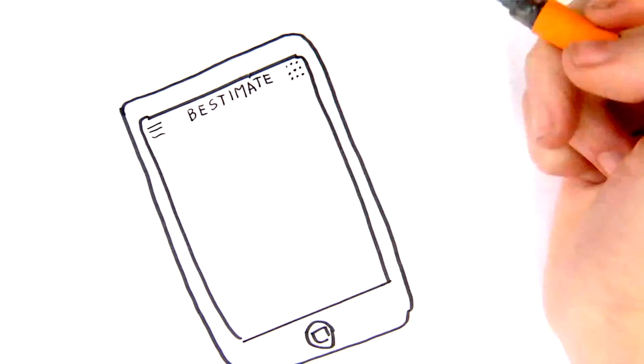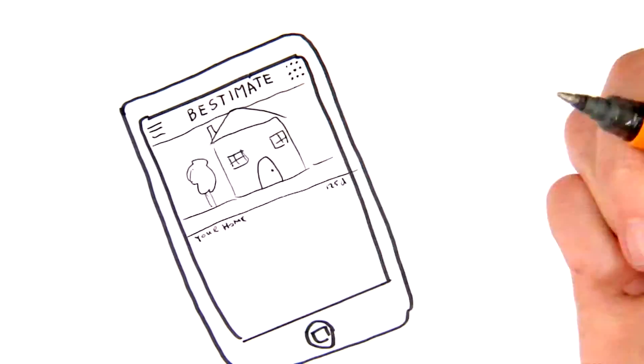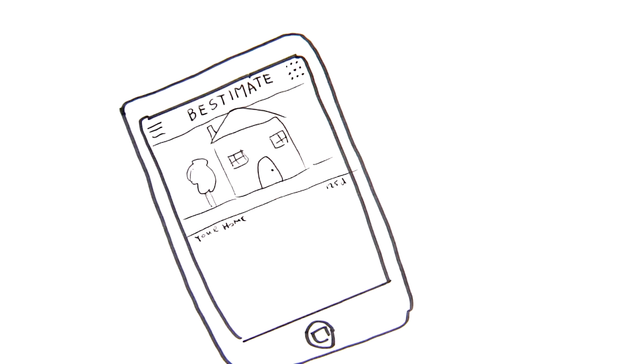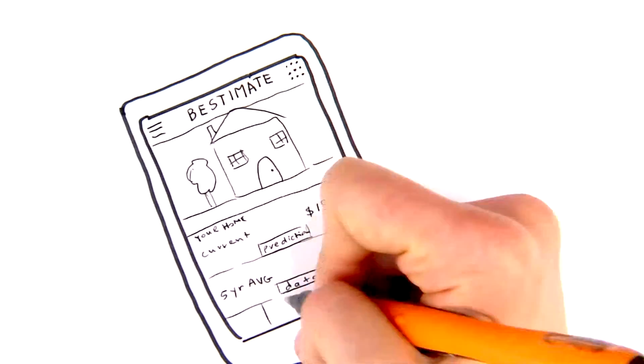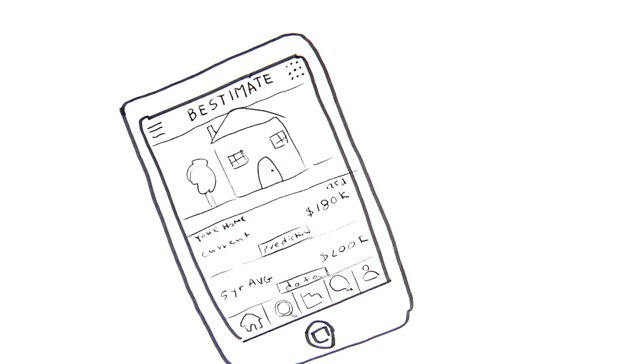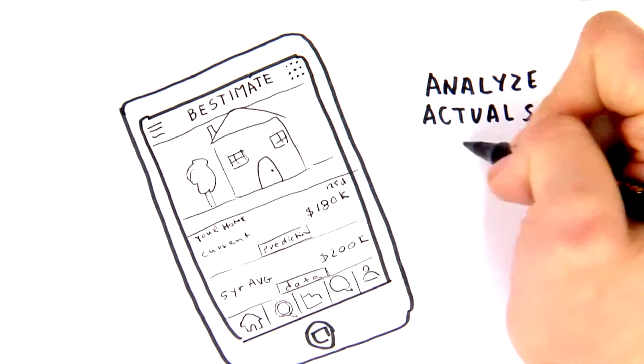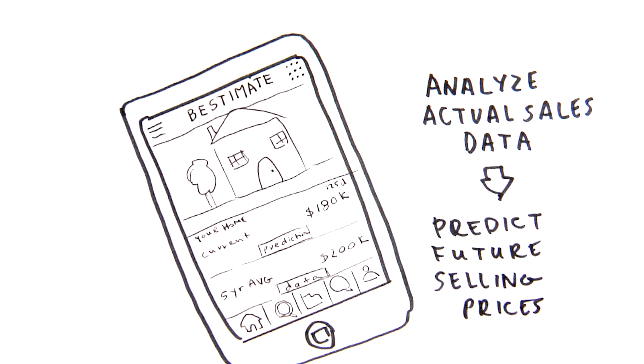Consider how we would build a housing price prediction app, Bestimate. We could fit a model to public data about houses which have already sold and their actual selling price. Then, users would use the app to predict the price of their home before selling based on the patterns learned.